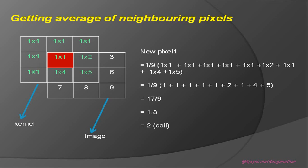We place the kernel so that its center pixel matches the pixel where the mean operation is performed. Starting from the first pixel to the last, we perform a mean operation on each pixel, making it the center pixel. For the first pixel, we compute: one plus one plus one plus one plus one plus two plus one plus four plus five, which equals 17.